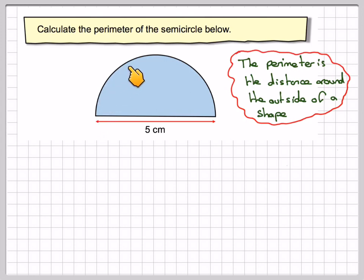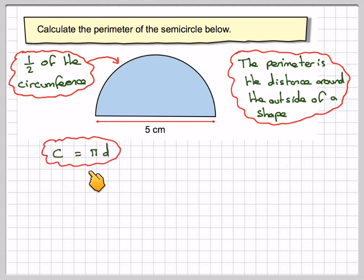What we're going to need to do is calculate this half of the circumference because it's a semicircle. The circumference of a circle is pi times d, and therefore half of the circumference is going to be 0.5 times pi times 5. 0.5 times 5 is going to give me 2.5 times pi.